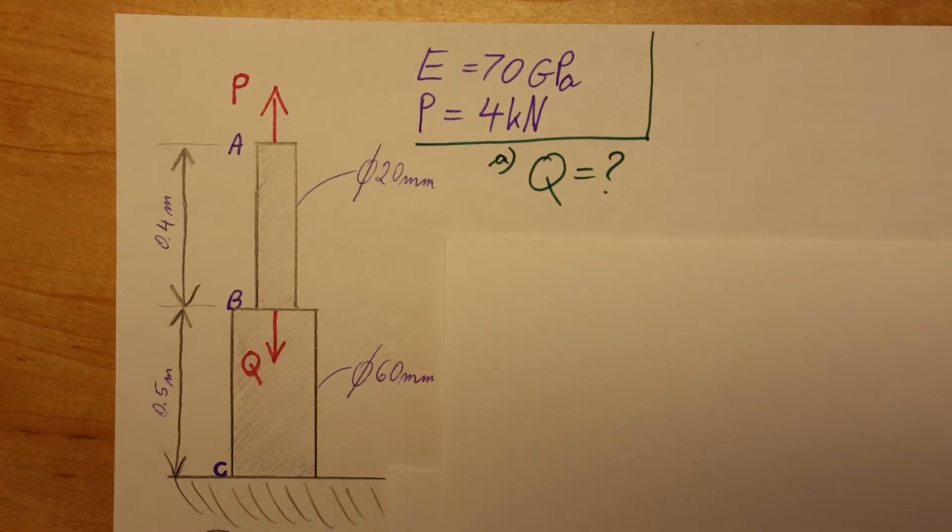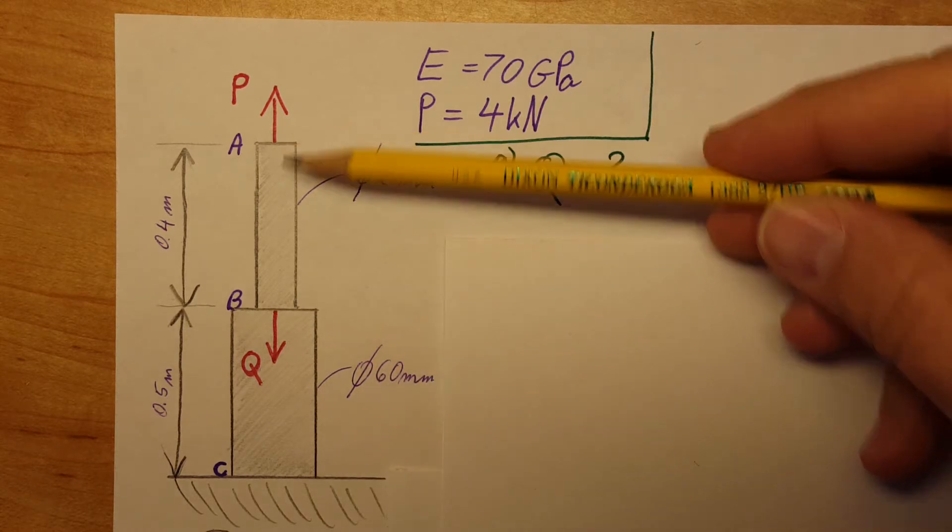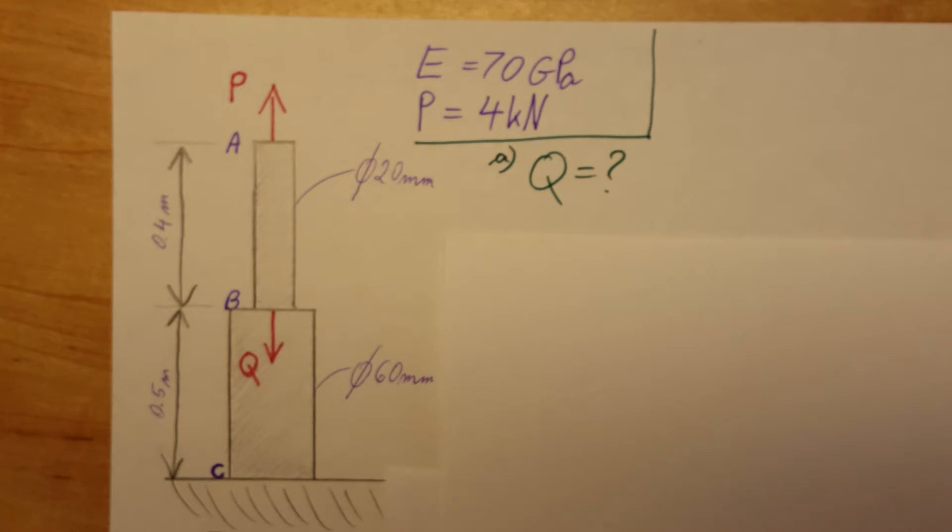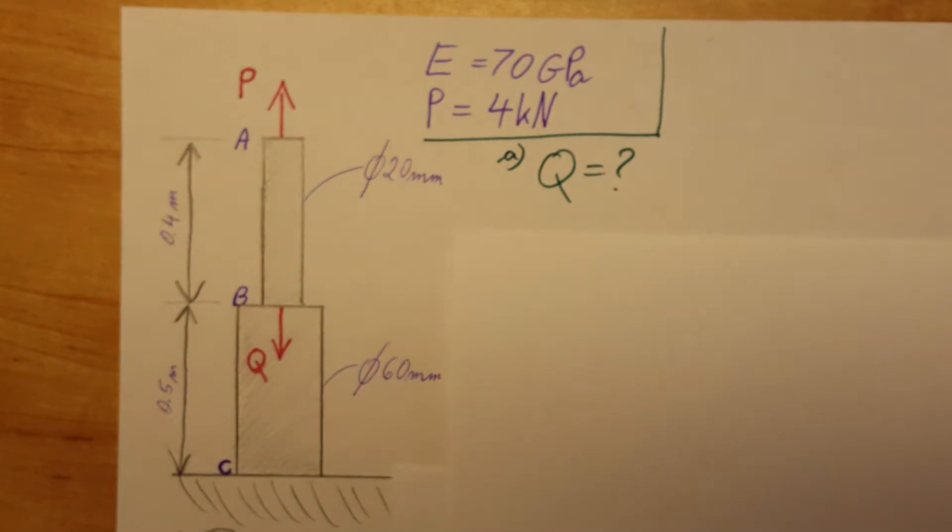This is a strength of materials problem. We're working with two pieces of rod that are welded together. Both portions of this rod are made of aluminum.